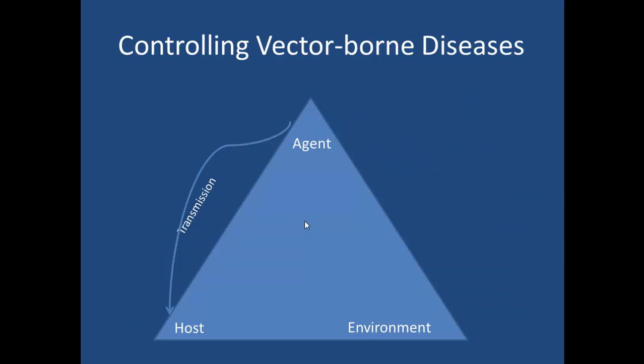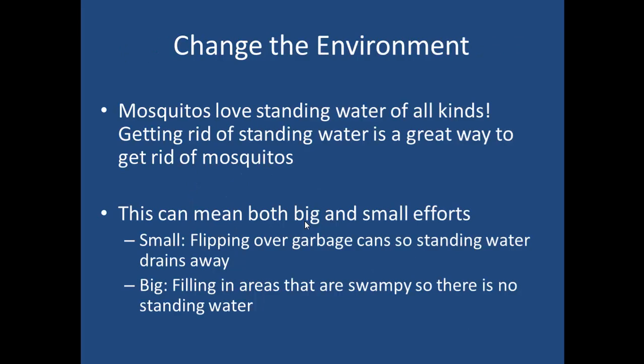So how do you actually control vector-borne diseases? We go back to the pyramid of transmission in which you can focus on the agent, the host, or the environment, as well as the transmission between the agent and the host. The first thing you can do is change the environment — probably the easiest way — by doing things such as flipping over trash cans and garbage that has standing water, or residential spraying. For some diseases this might be more of a challenge; for instance, the snails for schistosomiasis require large amounts of pesticide. In China they even use concrete over rivers to prevent the reeds from growing, to prevent the snails, which prevents schistosomiasis.